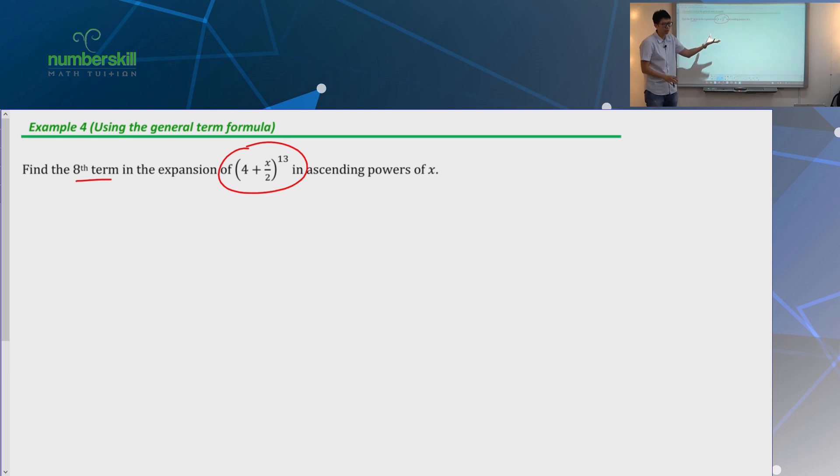Of course, one very silly way to do it is to just expand, expand, expand. At most, how many terms do you have? At most 14 terms, right? Expand until 14, then you count 1, 2, 3, 4, 5, 6, 7, 8. That's the one. Then you get the eighth term.